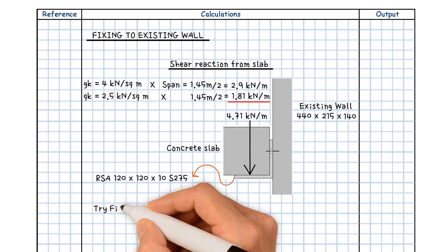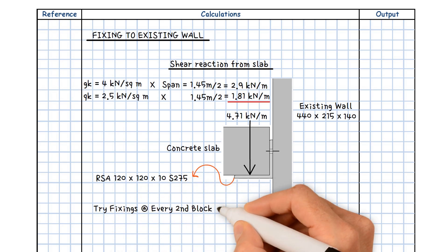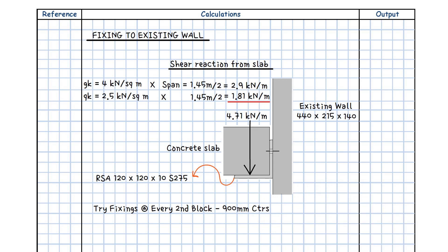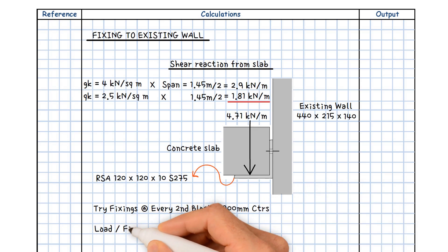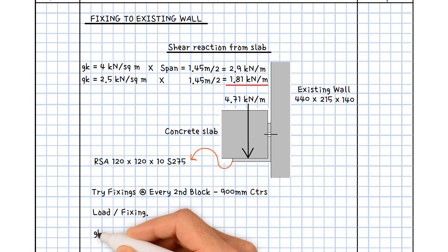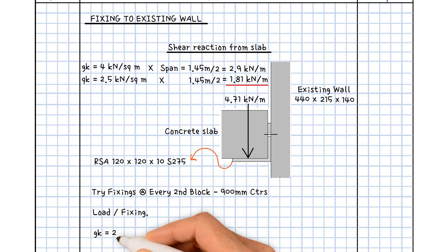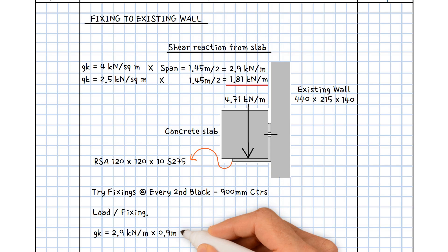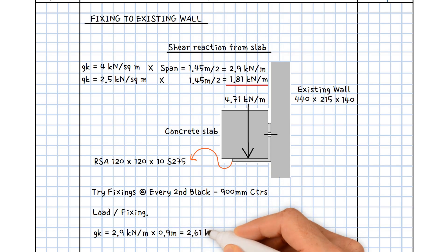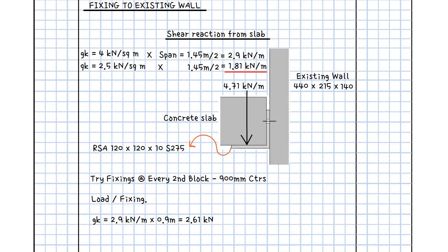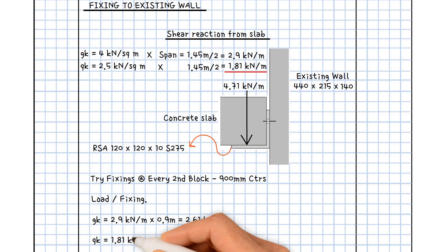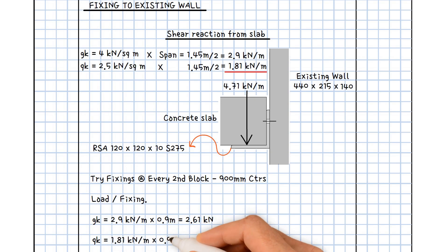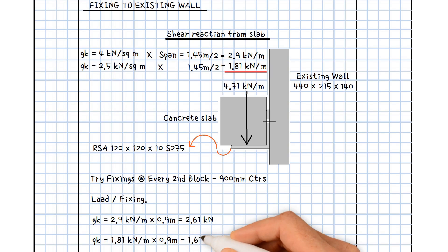Try fixings at every second block, 900 mm centres. Calculating the load per fixing: the dead load would be 2.9 kN per metre multiplied by 0.9 m, which equals 2.61 kN. And the imposed load of 1.81 kN per metre multiplied by 0.9 m equals 1.63 kN.